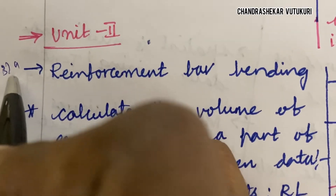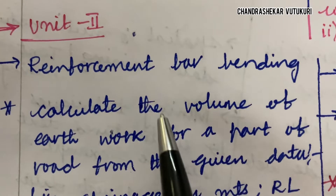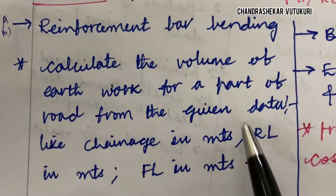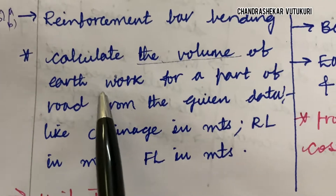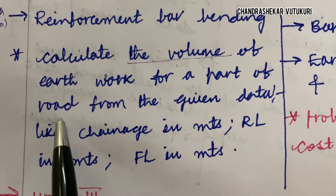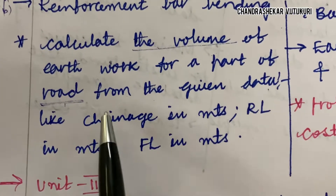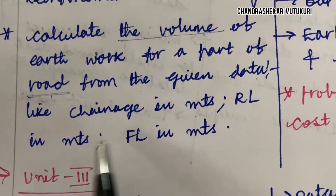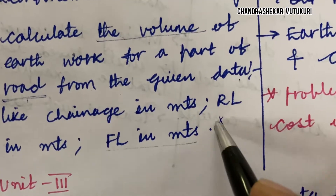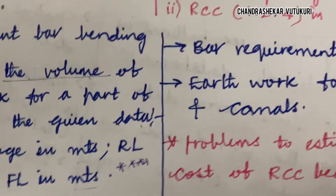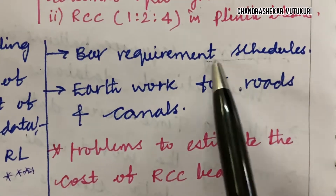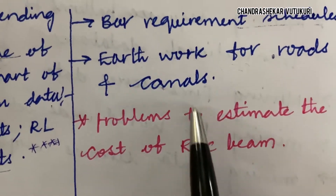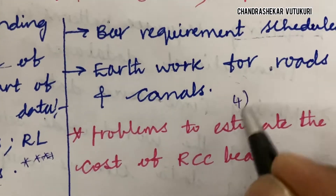Unit 2 — question 3A or 3B, or just the third question — is all about reinforcement and bar bending schedules. The problem will ask you to calculate the volume of earthwork for a part of a road for given data. They will provide a tabular column with chainage in meters, and formation level (FLN) and road level (RLN) in meters. Such problems are direct ten-mark questions. Bar requirement schedules may be a short question, and earthwork for roads and canals may be asked for both short questions and problems.